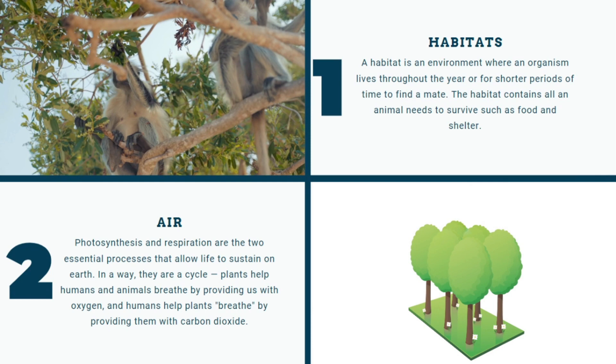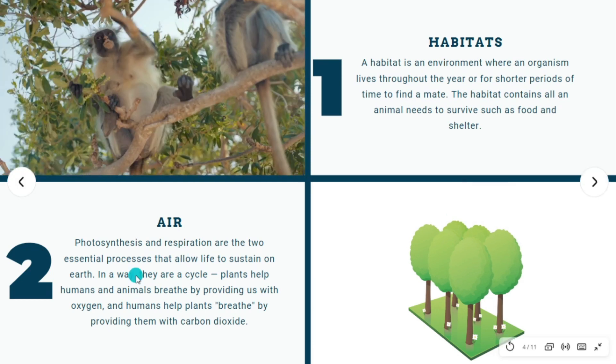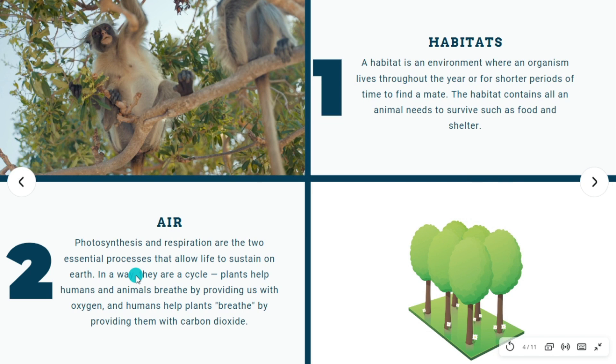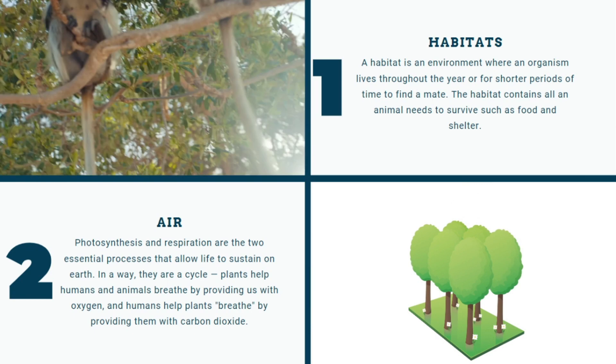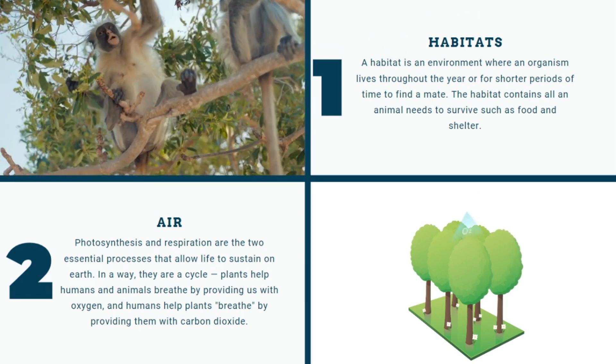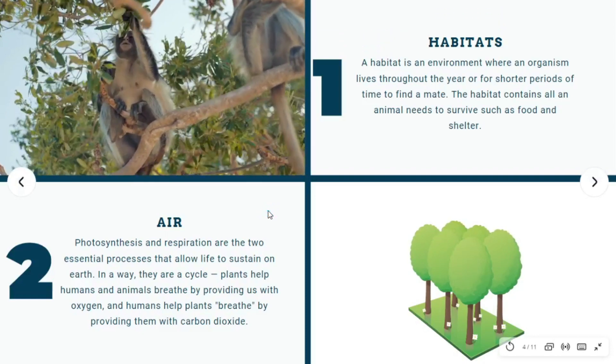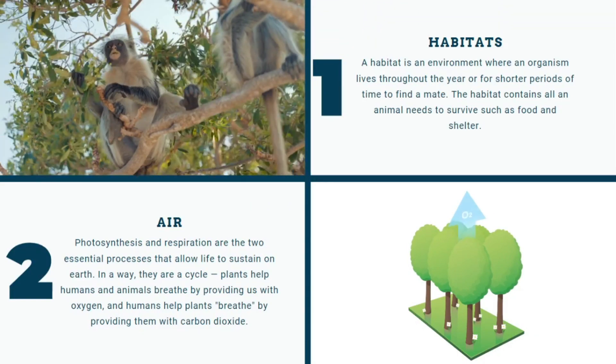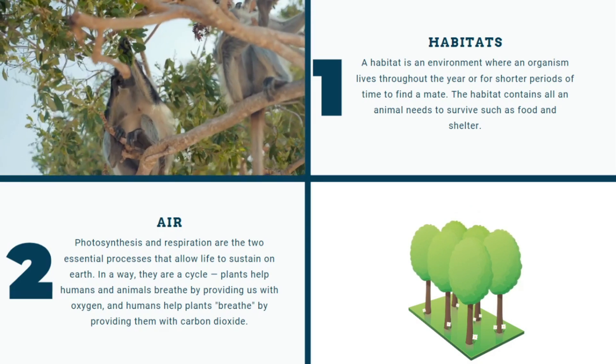Photosynthesis and respiration are the two essential processes that allow life to sustain on earth. In a way, they are a cycle. Plants help humans and animals breathe by providing us with oxygen, and humans help plants breathe by providing them with carbon dioxide.